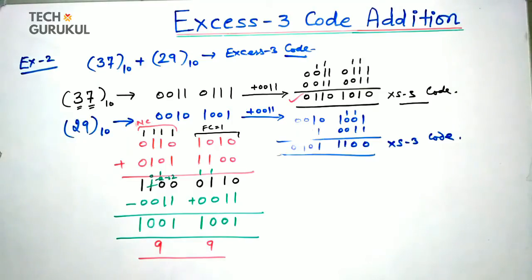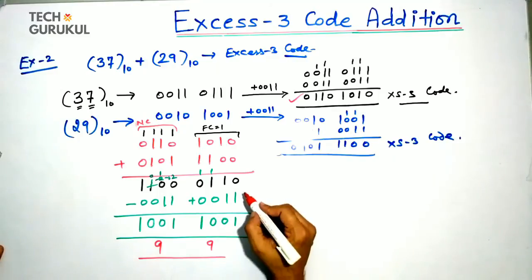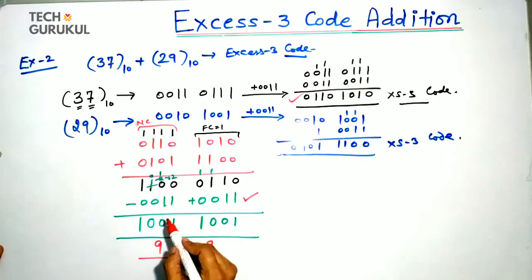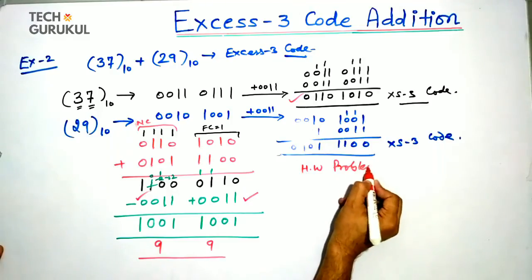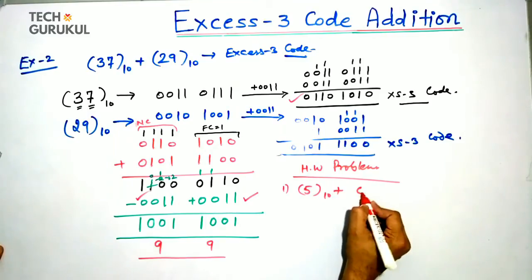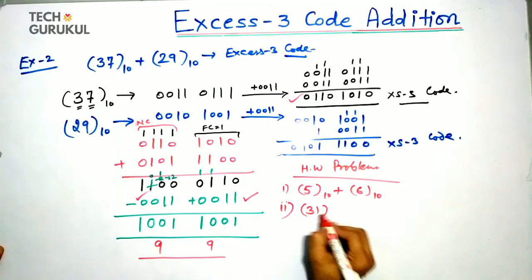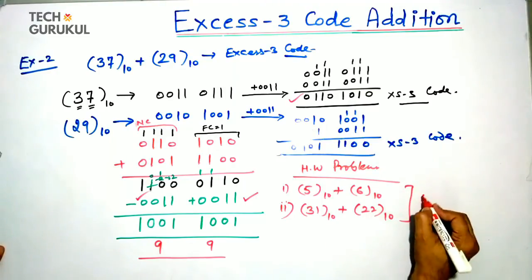This is the method for excess-3 addition. There are 2 rules: if we have a final carry of 1, we add 3 to the final result; when we have no carry, we subtract 3 from the final result. Now for homework: first, add 5 plus 6 in excess-3 code; second, add 31 plus 22 in excess-3 code.